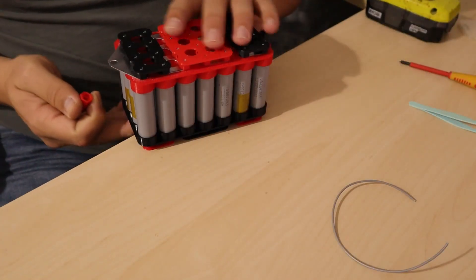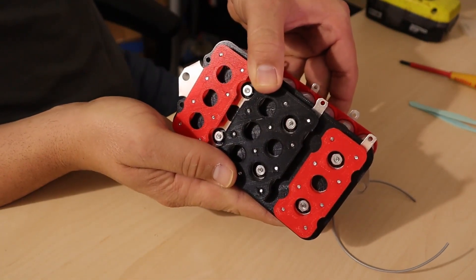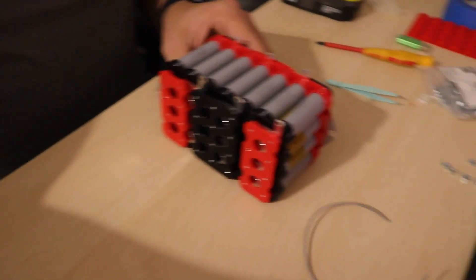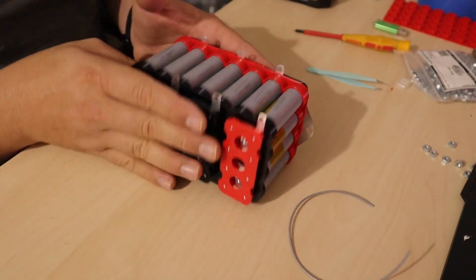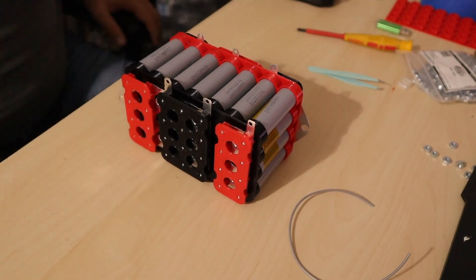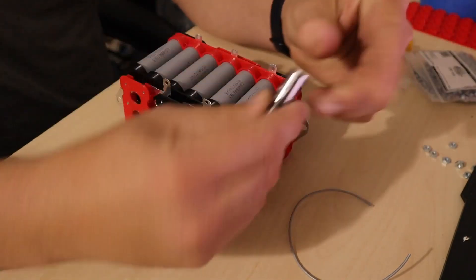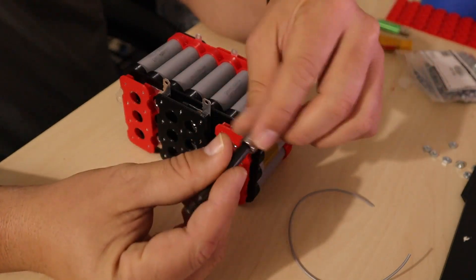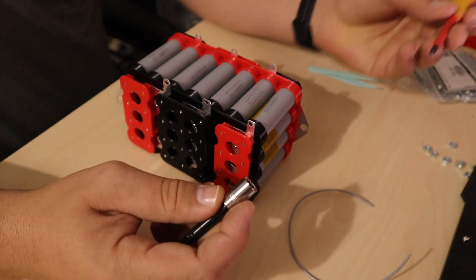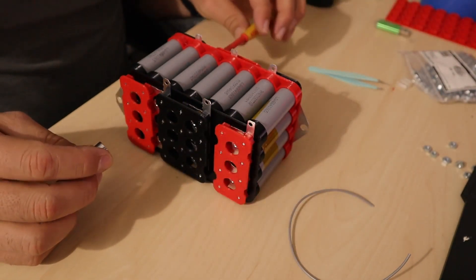Once you're done pre-adjusting the nuts underneath the battery, you are going to place your battery with the bus bar tabs facing up. Make sure everything is okay, everything is correct. Then you're going to take an eight-millimeter cup and use that with a screwdriver to adjust the battery.